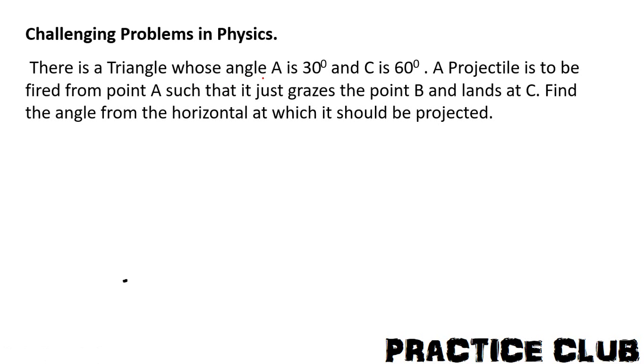There is a triangle whose angle A is 30 degrees. This is the angle A, equal to 30 degrees. And angle C is 60 degrees.